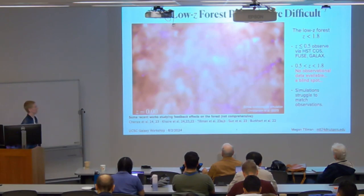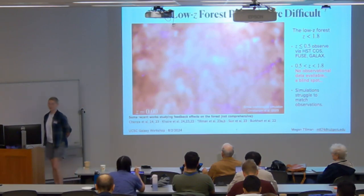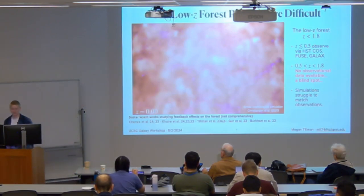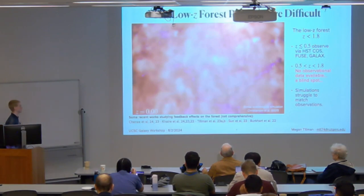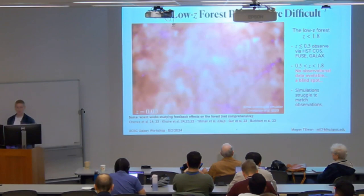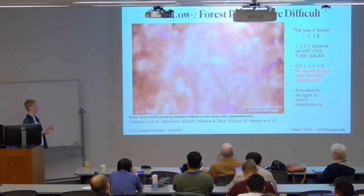With the little observational data we do have, simulations are struggling to match observations. Famously, if you are familiar with this field, the b-values of simulations never match observations. You also have struggles with the column density distribution, power spectrum, etc. This is why many people have been looking for other mechanisms that can resolve this disconnect between simulations and observations — and that's why I'm looking at AGN feedback.